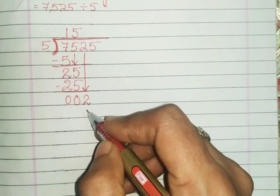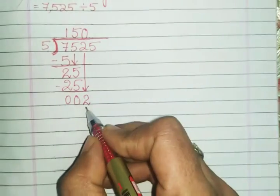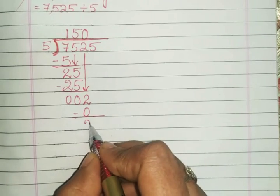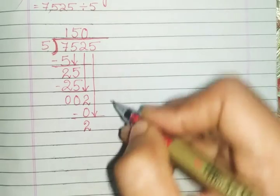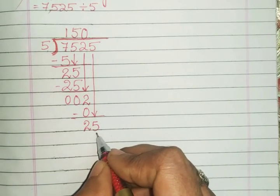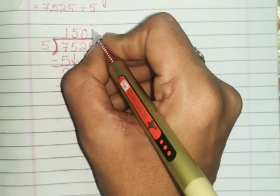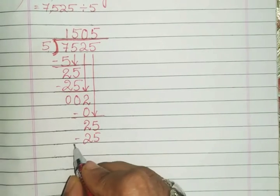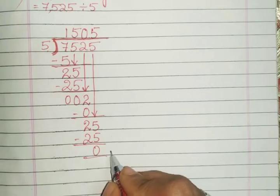Five ones are 5—you cannot write that, so go to the smaller one. Five zeros are 0. Now subtract: 2 minus 0 is 2. Now you can bring 5 down. The question becomes 25 again. So in the 5 table, where is 25? Five fives are 25. Now subtract: 25 minus 25 is 0.